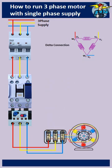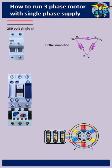First we need to connect the motor with delta connection. Using the two-pole breaker, connect the single-phase supply to the magnetic contactor.